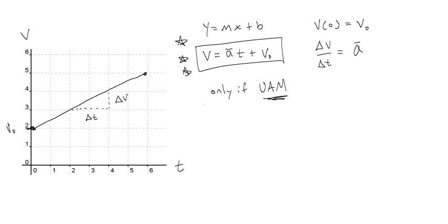We use UAM because it is a phrase that Galileo coined in his book Two New Sciences, when he decided that accelerated motion was worth studying because things that fall do so with a uniform or constant acceleration.